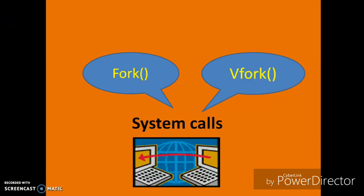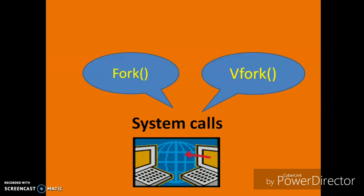Hello friends, welcome back to the video lecture series on operating systems. Today we are going to see some basic implementation using the fork and vfork system calls. In fork system calls, they always execute the child process and the parent process simultaneously. By using the fork system call we can create child processes, which is useful in synchronizing techniques.